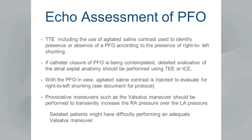The echo assessment of PFO includes the use of agitated saline contrast to identify the presence or absence of an atrial septal communication; the document has a complete protocol for how this should be performed. If catheter closure is being contemplated, a detailed evaluation of atrial septal anatomy should be performed using TEE or intracardiac echo. Agitated saline contrast is used to evaluate for right-to-left shunt. Provocative maneuvers such as a Valsalva maneuver should be performed to transiently increase right atrial pressure — noting that sedated patients may have difficulty performing an adequate Valsalva.